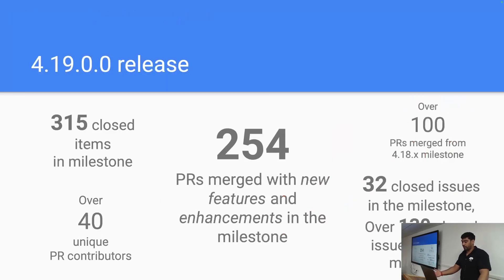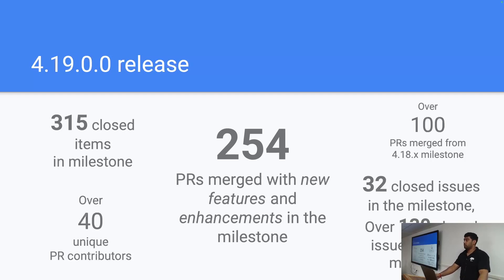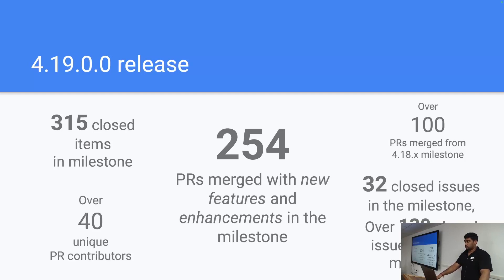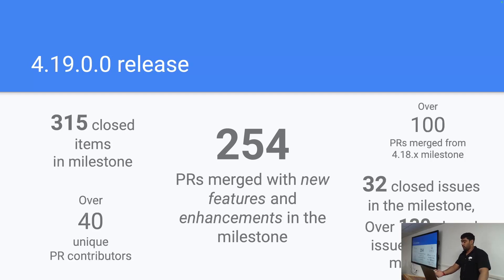With 4.19 we closed around 315 items in the milestone. There were 254 PRs merged with features or enhancements, and over 100 PRs from the 4.18 milestone were forward merged, so all fixes from 4.18.1 are included. Over 40 unique contributors contributed to the 4.19 release, and similarly over 130 issues from the 4.18 milestone were carried forward.